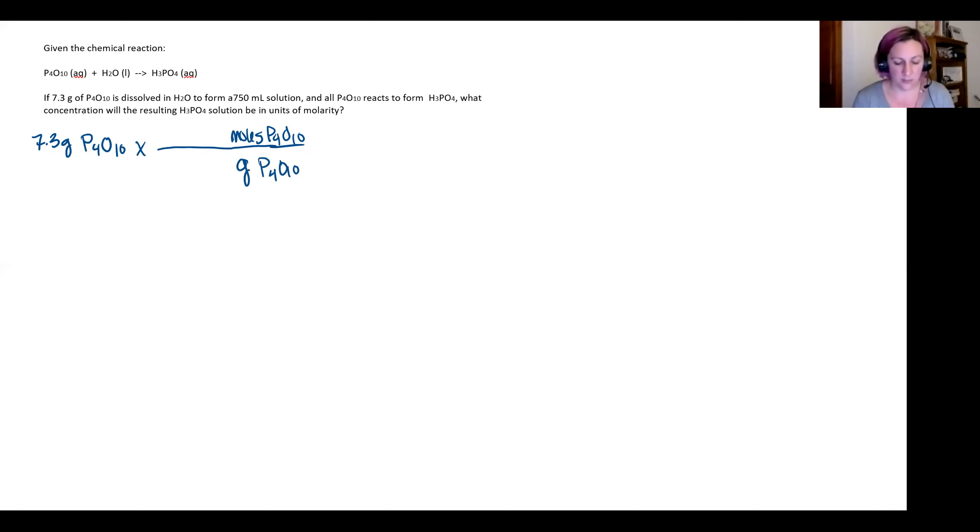That's going to be the molar mass of P4O10. If I go to my periodic table and calculate this, I'm going to get a value that is 283.886 grams per mole. So I'll put that in. One mole is going to weigh 283.886 grams.